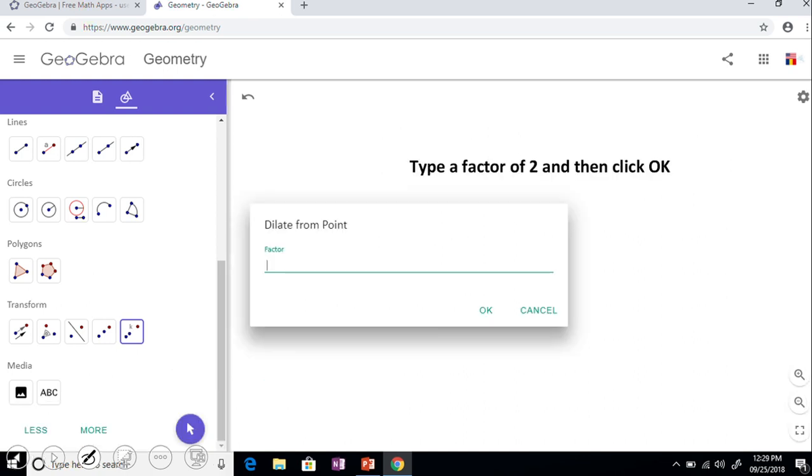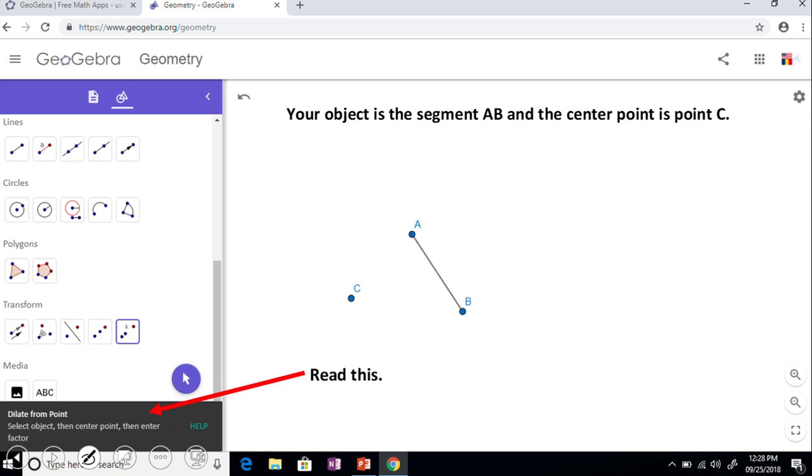Let's go back a little bit. Our object will be AB, the center of dilation will be C, and you will see it on the next thing. We're going to type in the scale factor. You're going to click on AB and C after you click on this tool.